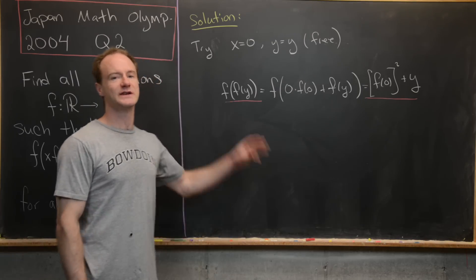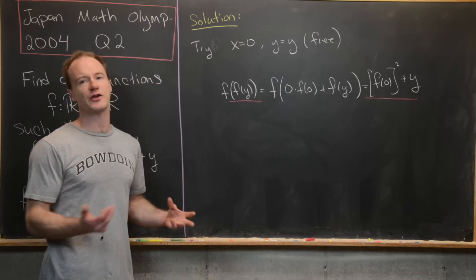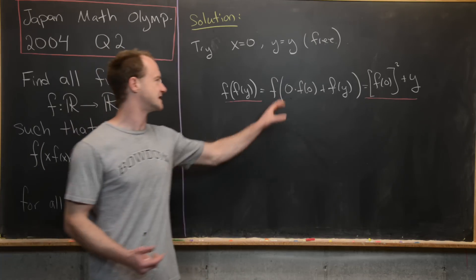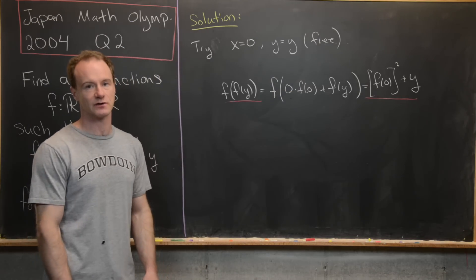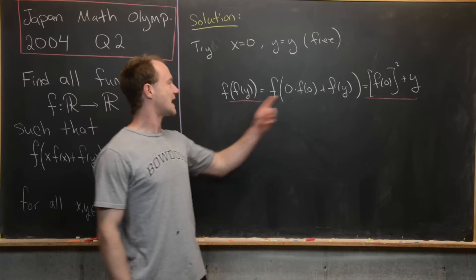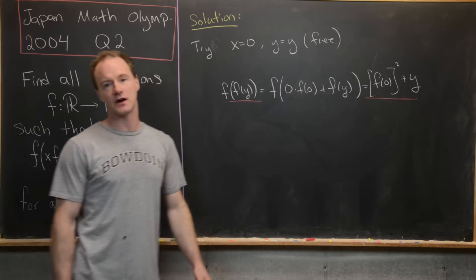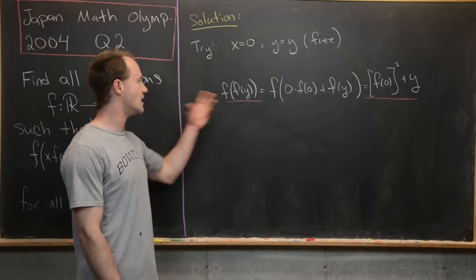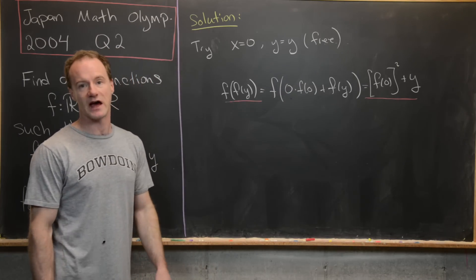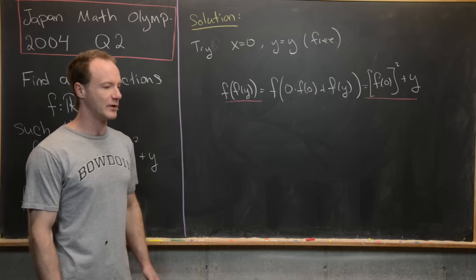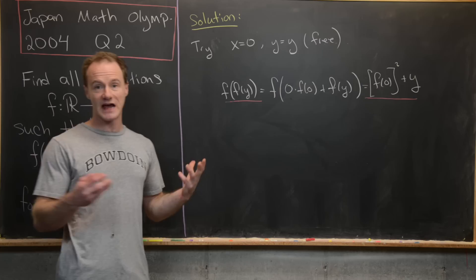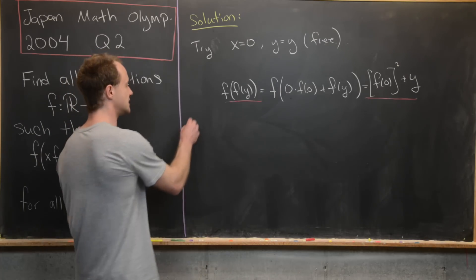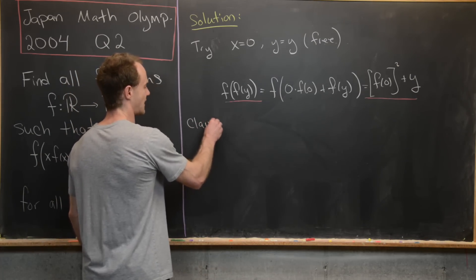The next thing we want to do is look at this equation and reevaluate what to plug in. Notice the 0·f(0) cancelled because 0 times anything equals 0. What if we could make the output of f equal to 0, so it cancels for another reason? But in order for 0 to have a pre-image, we need to show that f is surjective.